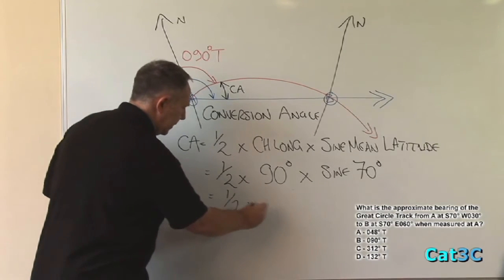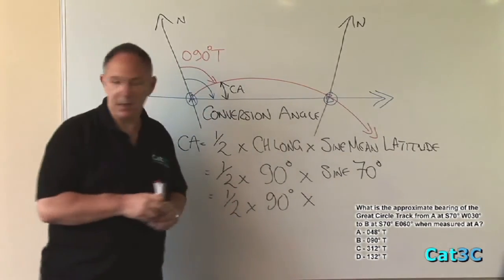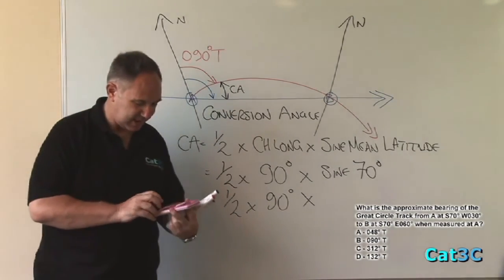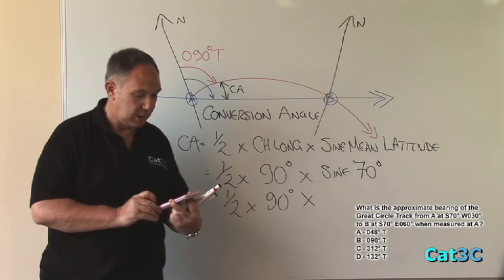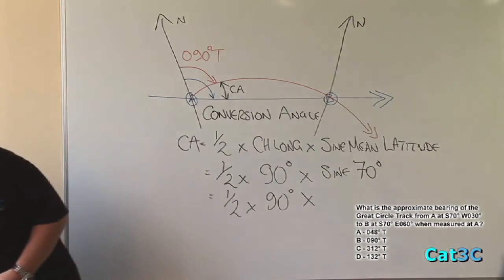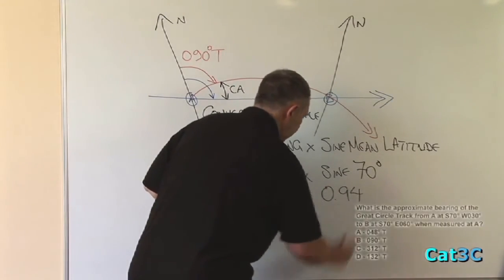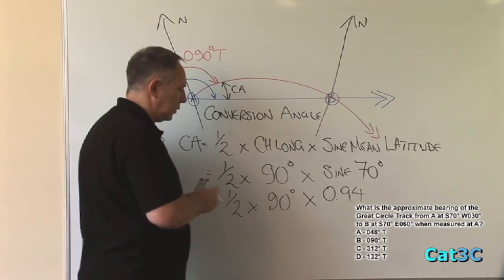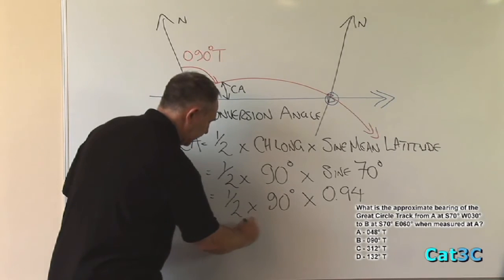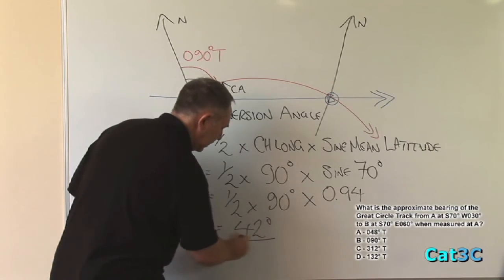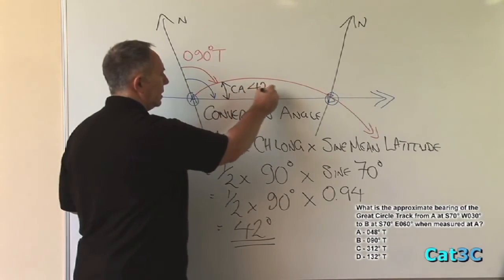This gives us half times 90 times the sine of 70. I'll take my calculator, and on the calculator, I'll look up the sine of 70 is equal to 0.94. Multiply those numbers together. Half of 90 is 45. 0.94 times 45 is 42 degrees. So the value of the conversion angle is 42 degrees.